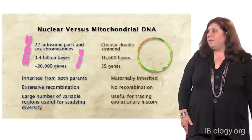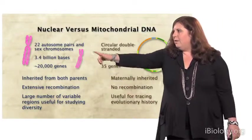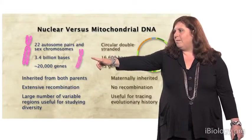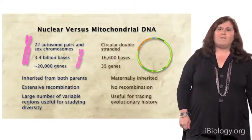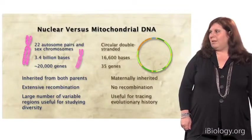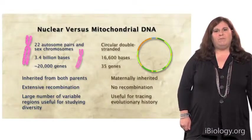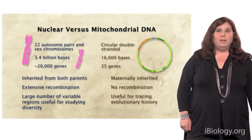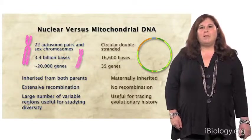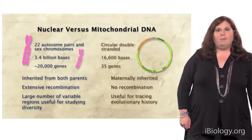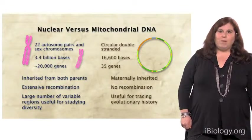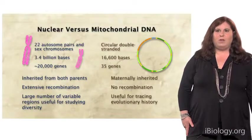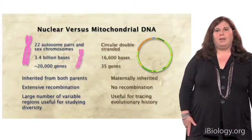What is the difference between these different genomes? The nuclear genome consists of 22 autosomal pairs of chromosomes and the sex chromosomes — XX for females and XY for males. The nuclear genome is about 3.4 billion bases in size and consists of about 20,000 coding genes. It's inherited from both parents, but it undergoes extensive recombination each generation. One reason it's useful is that there are so many different locations where we can study variation, given that there are 3 billion nucleotides.